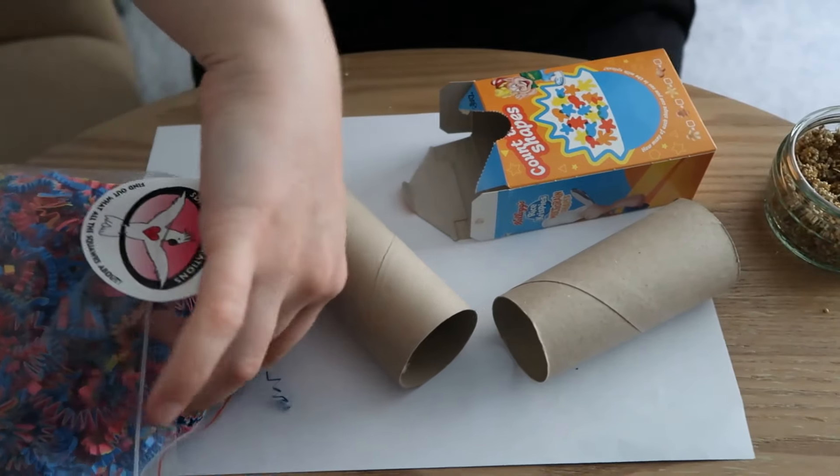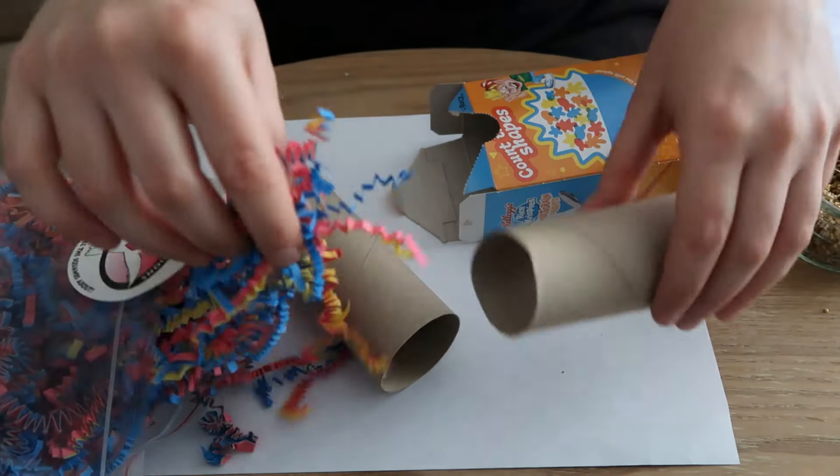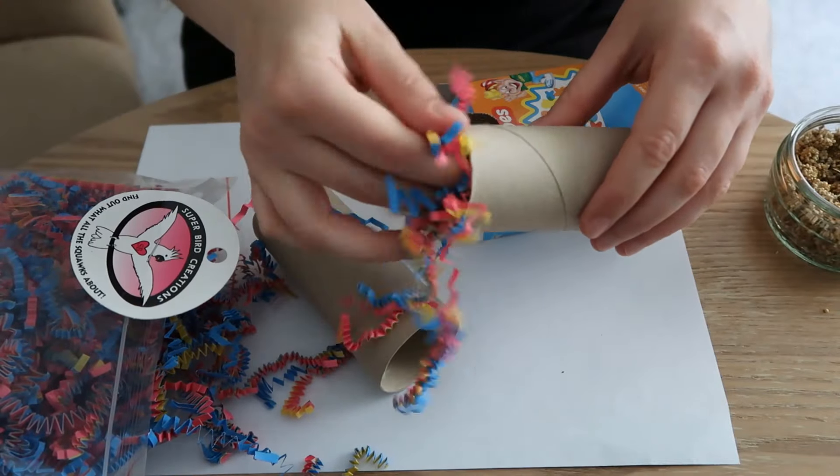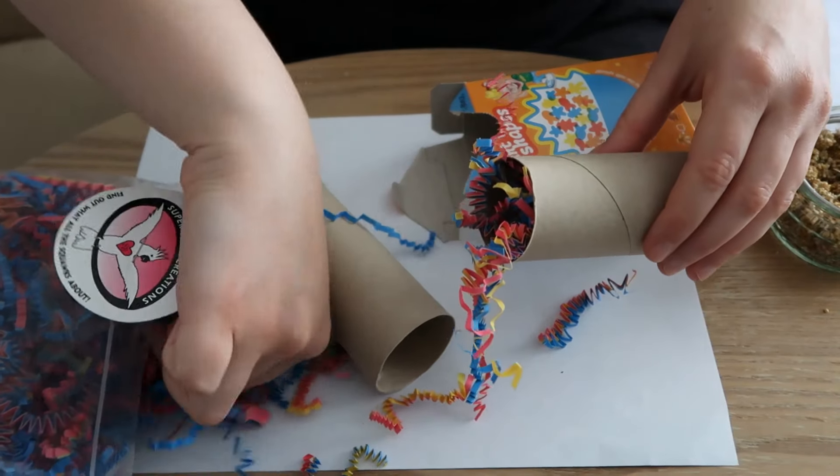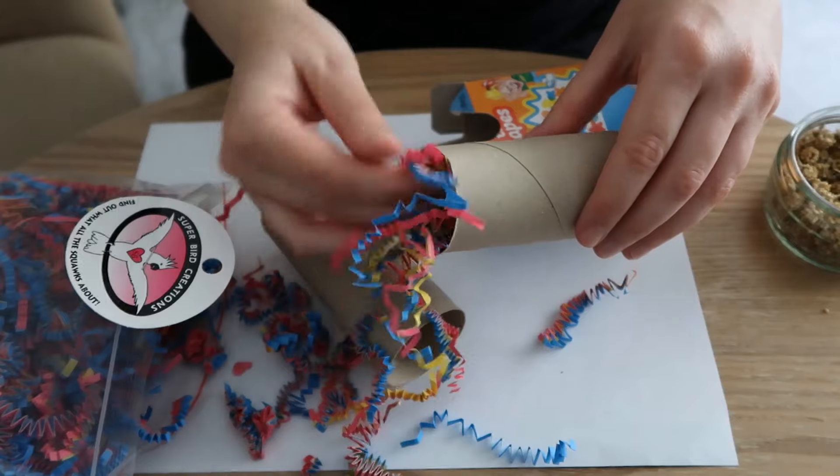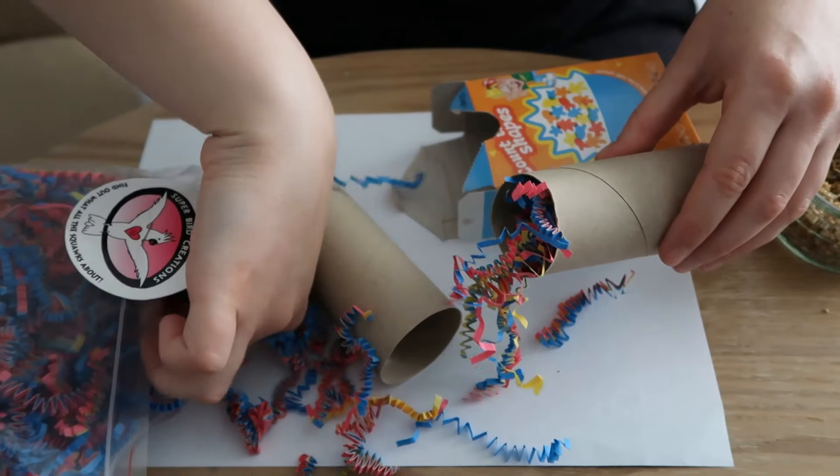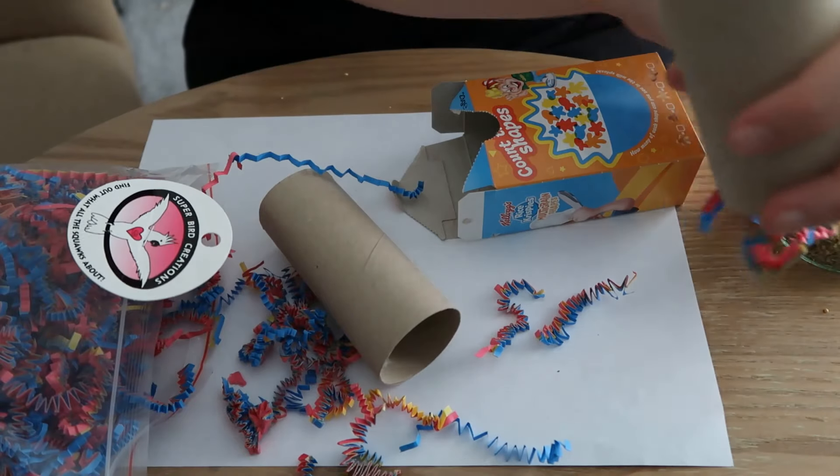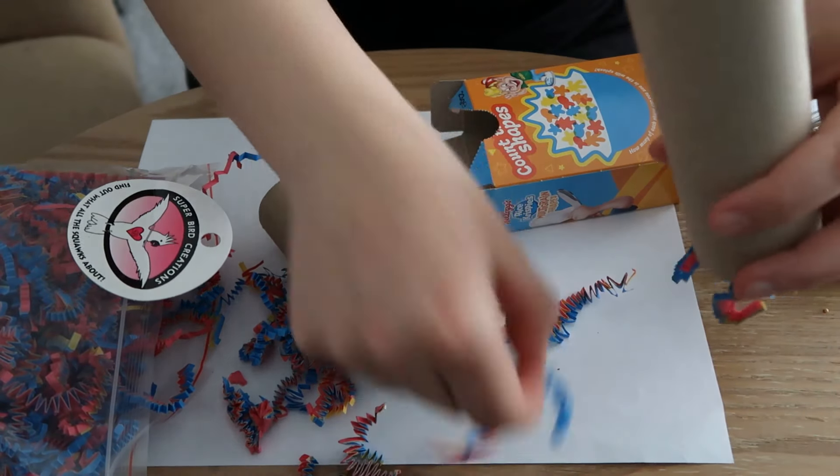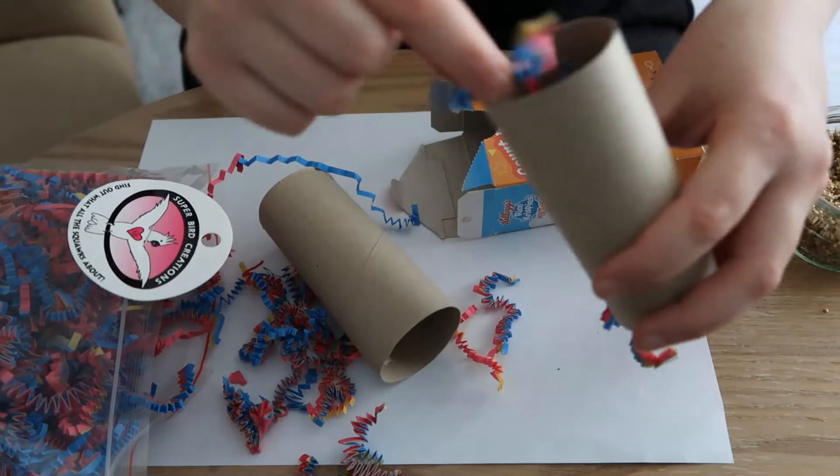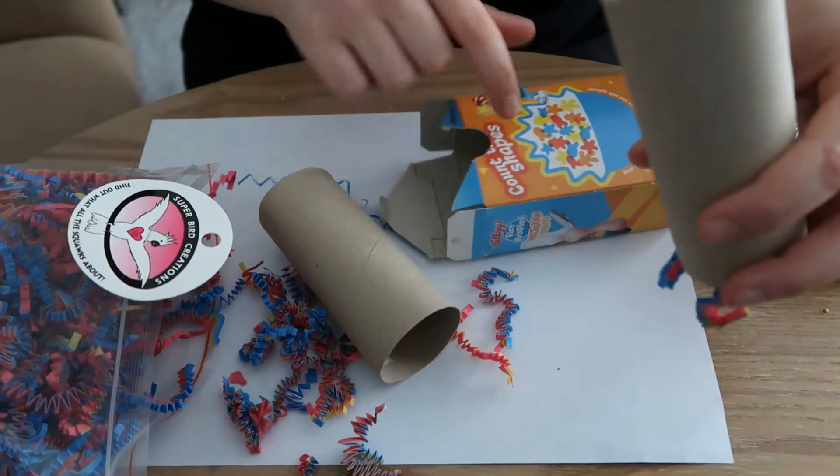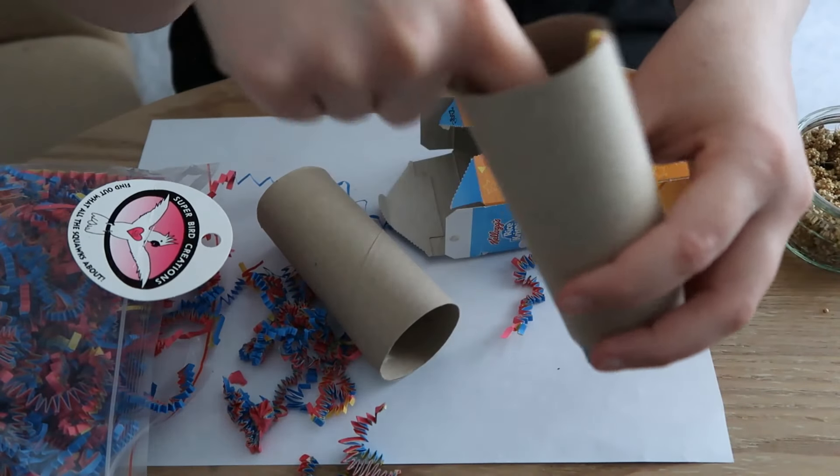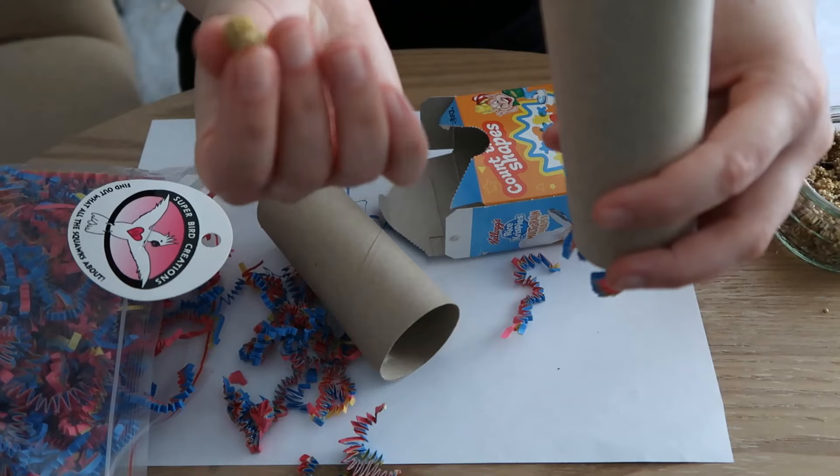So basically the idea is to make another kind of foraging treat. You're going to want to get some of your shredded paper. Now bird safe shredded paper needs to be colored with food dye. If it's not colored with food dye, there's a good chance that it's going to be toxic, so make sure that it's safe. This one is from Northern Parrots and I'm going to pop a link in the description. It is an affiliate link, which means we get a tiny proportion of the money and it will all go towards the birds, so it's totally up to you if you'd like to click on it.